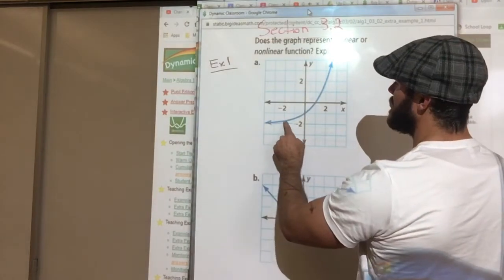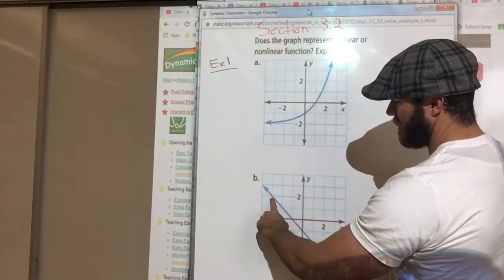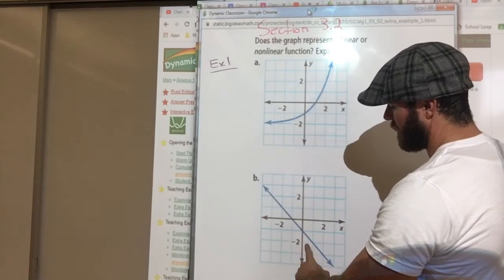This does not have a constant rate. This does. It goes down one over one, down one over one, down one over one. It's just constant.